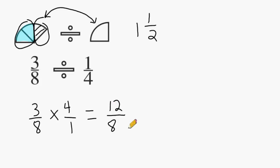Notice that the numerator and the denominator can be reduced by a factor of 4. So let's divide the numerator by 4 as well as the denominator by 4. And that would give us 3 over 2.